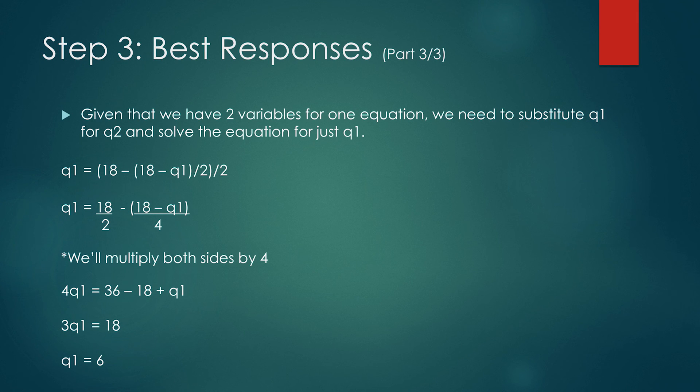Given that we have two variables for one equation, we substitute q1 for q2 and solve for q1. This gives us q1 equals (18 minus (18 minus q1)/2) divided by 2. Simplifying: q1 equals 18 over 2 minus (18 minus q1) over 4. Multiplying both sides by 4 and simplifying, we get q1 equals 6.